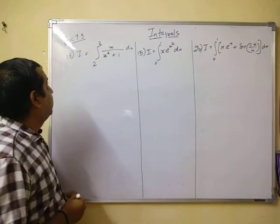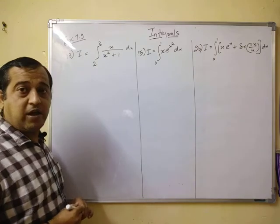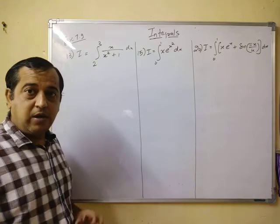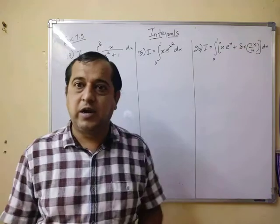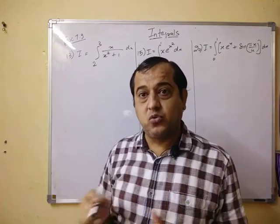Proceeding further, we come to problem number 13 of XI 7.9. Here we are having I equals integral from 2 to 3, x upon x square plus 1. Now in this case, you can clearly see that in the numerator you are having x and the denominator you are having x square plus 1.